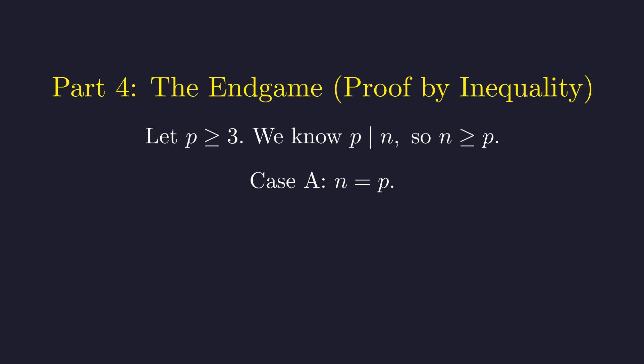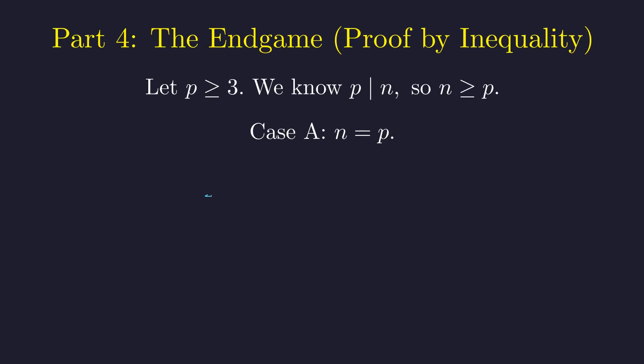Let's analyze the simplest case first, where n is exactly equal to p. Our equation becomes p to the power of (p-1) equals (p-1) factorial plus 1. We want to show this is impossible for p greater than or equal to 3.